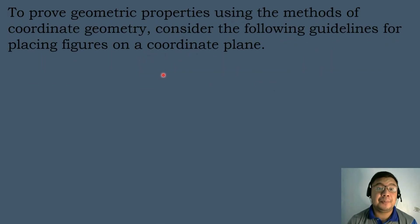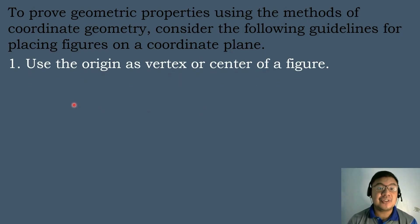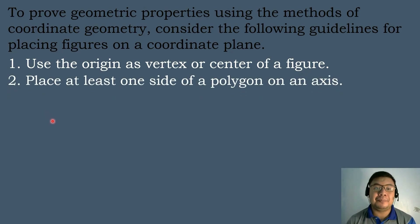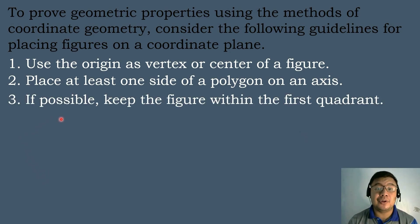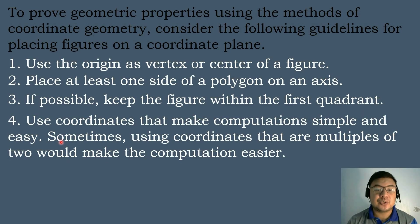So let's have the following guidelines for placing figures on a coordinate plane to prove geometric properties using the methods of coordinate geometry. The first guideline is to use the origin as vertex or center of a figure. The next one is to place at least one side of a polygon on an axis — meaning on the x-axis or the y-axis. And the third one, if possible, keep the figure within the first quadrant.